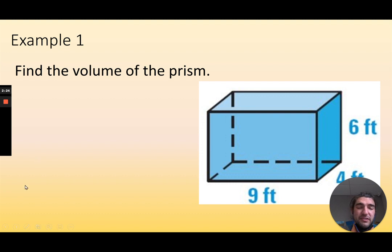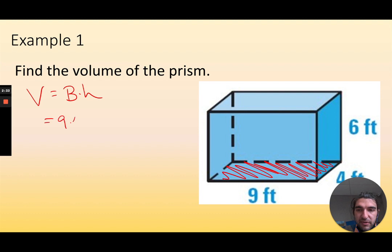All right, so here's a prism here. I'm going to use my volume as base times the height. So the size of the base is 9 by 4. Then the height is 6. And if I just multiply it all together, 9 times 4 times 6 is 216 cubic feet.